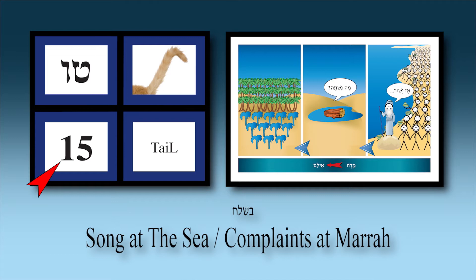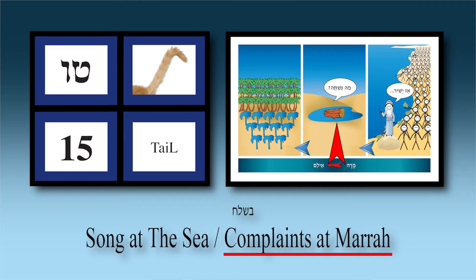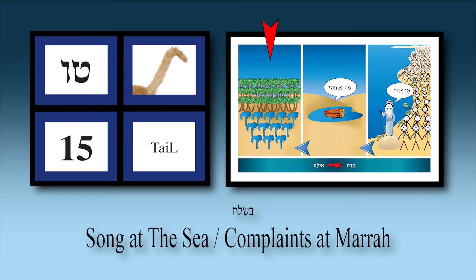Chapter fifteen — 'tail' (tael = 15, T=1, L=5). Klal Yisrael arrive on the other side of the Yam Suf, see that the Egyptians truly did drown, and sing Az Yashir — Moshe leads the song and Klal Yisrael respond. Second picture: they arrive at Mara — from the word maror, bitter — the waters were undrinkable. Moshe threw in a bitter log and Hashem made the miracle that the bitter log sweetened the bitter waters. Third picture: they arrive at Elim — 70 palm trees for the 70 members of the Sanhedrin and 12 springs of water for the 12 shevatim. These three events are in chapter fifteen tail.